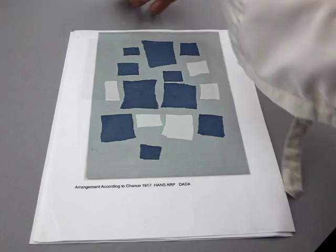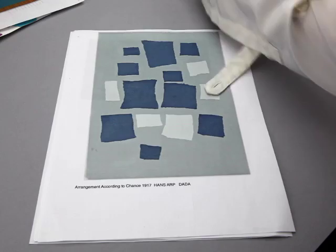Now we're going to try to create our artwork according to chance. So what you're going to need is some kind of backing sheet. You can either use one of the sheets from your multimedia pack, a white sheet.